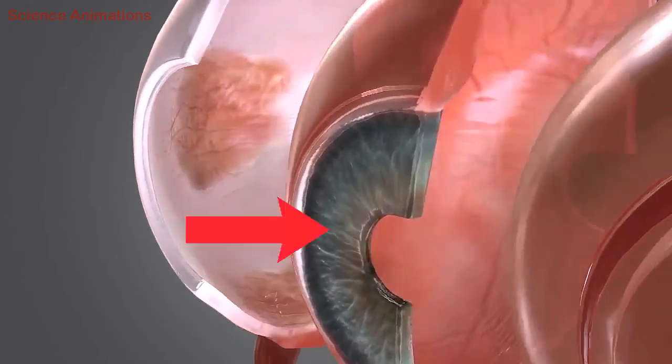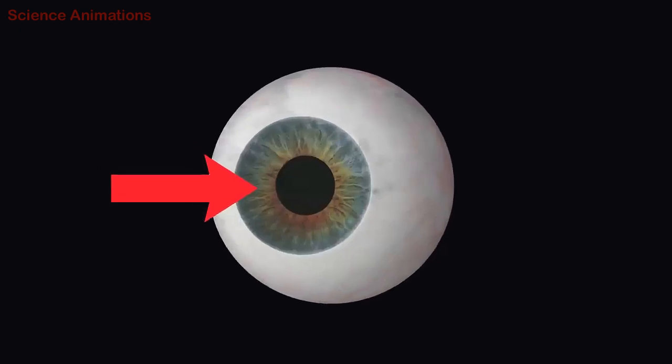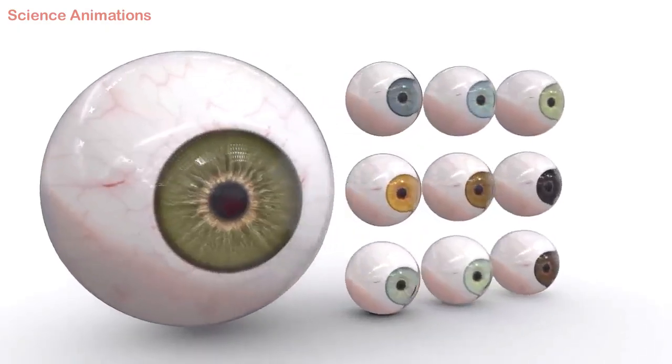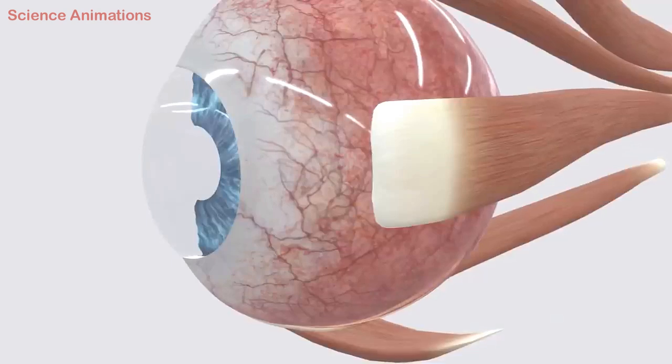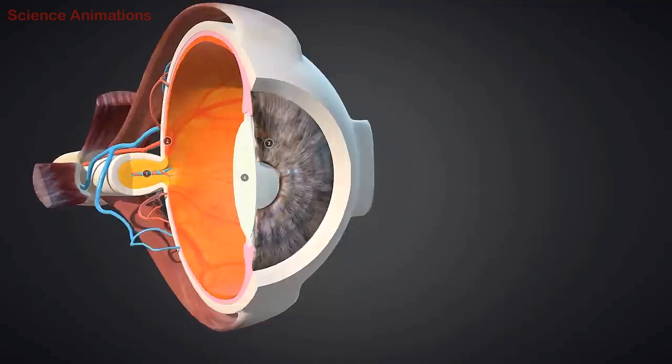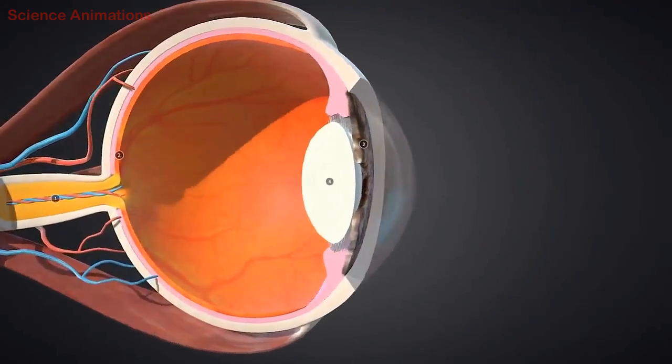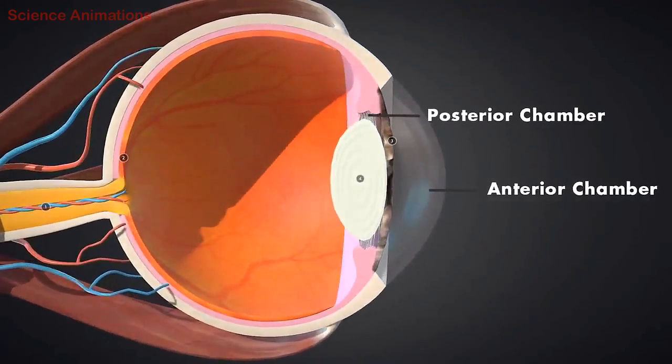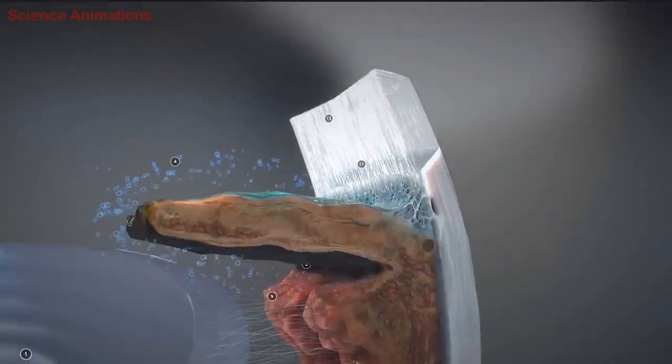The iris is also present in the middle layer of the eye. It is the visible part of the eye and varies in color among individuals. The iris is located behind the cornea and in front of the lens. It divides the anterior segment of the eye into the anterior and posterior chambers.